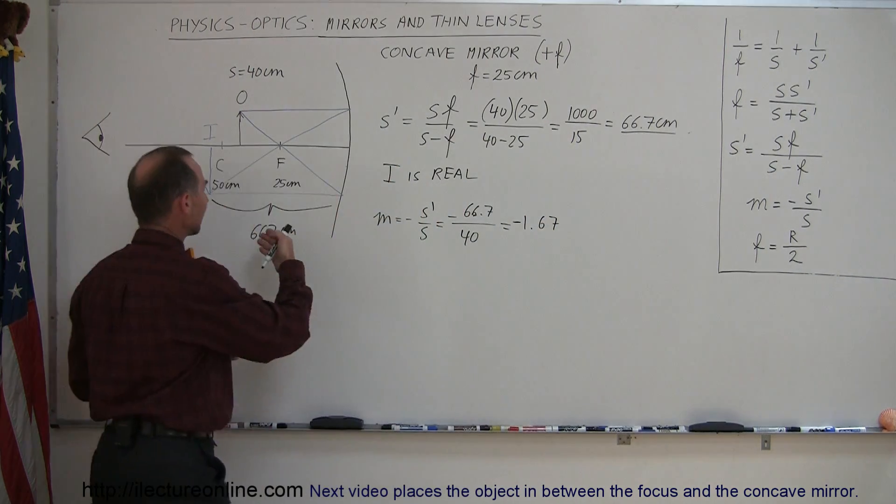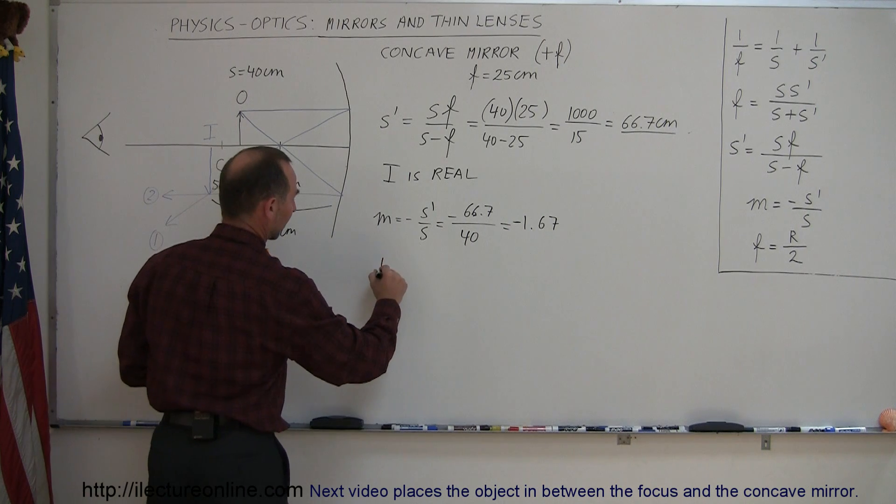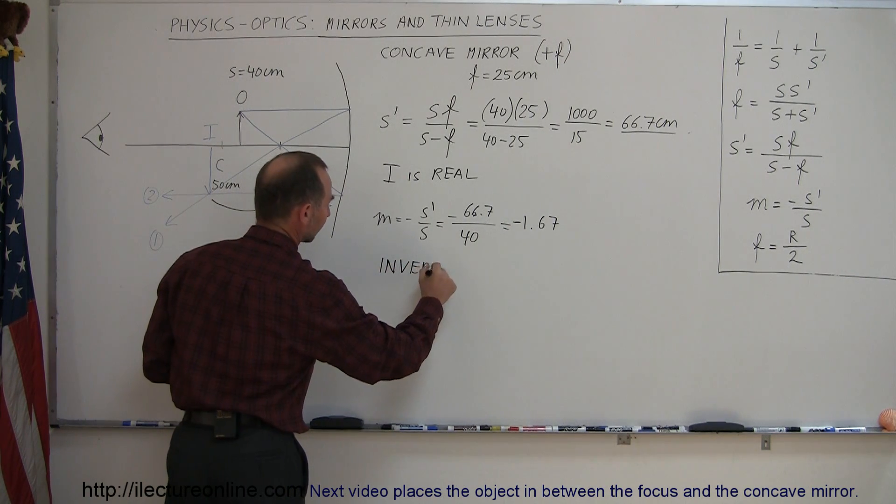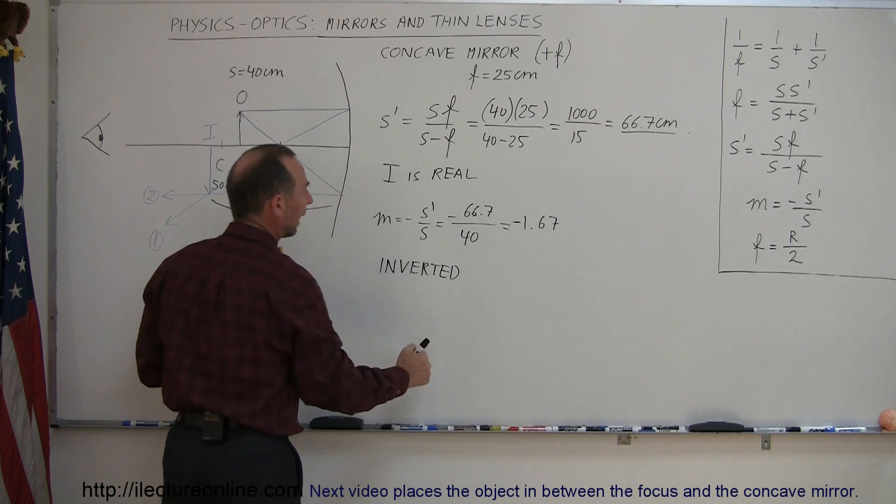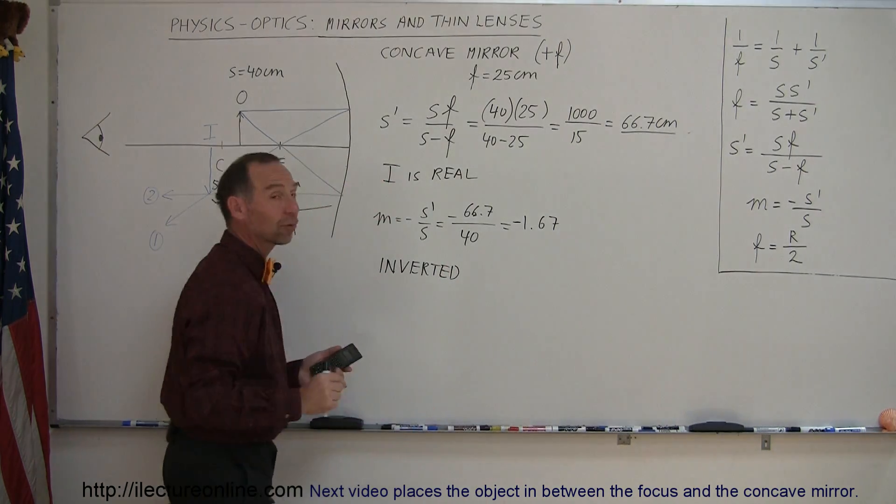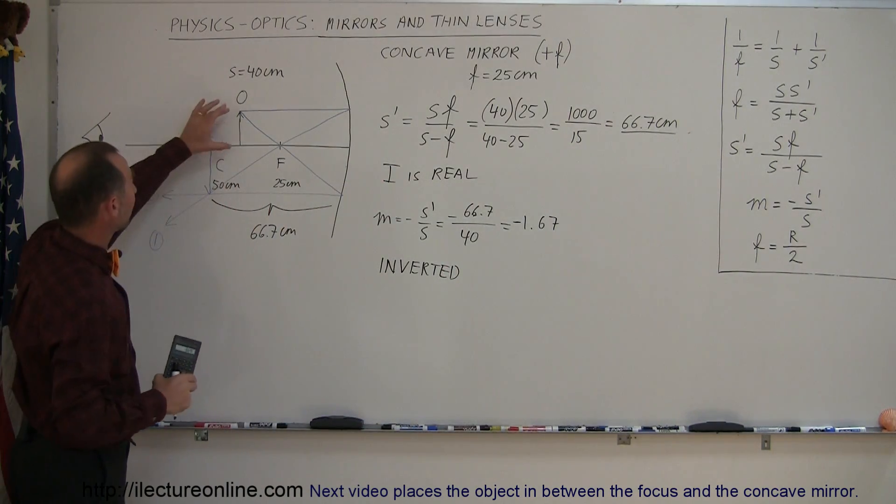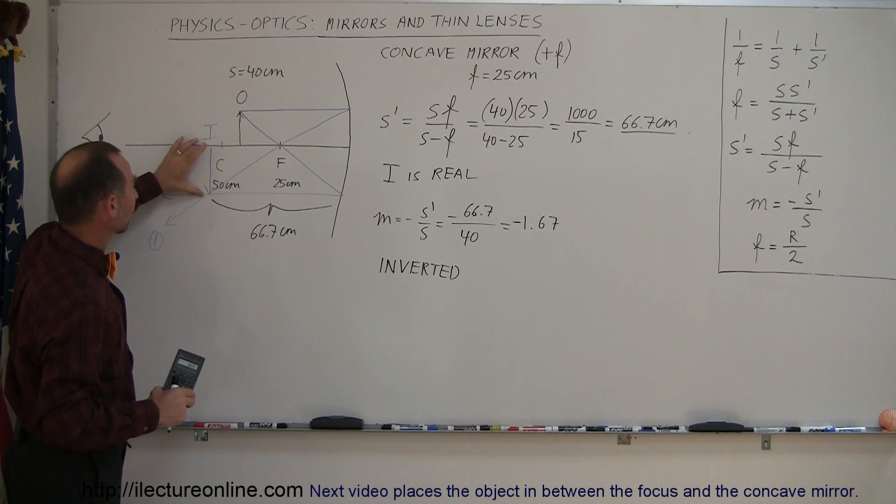The negative indicates that the image is inverted, so therefore we can say that it's inverted or upside down, and it's 1.67 times as large as the original object. So the object was this large; this is 1.67 times as large as that. So that's how we find that.